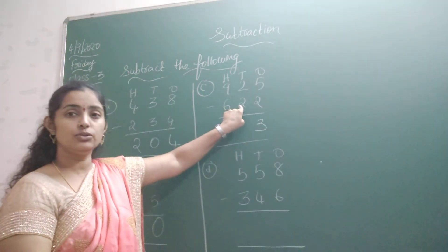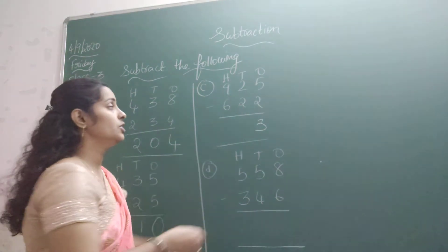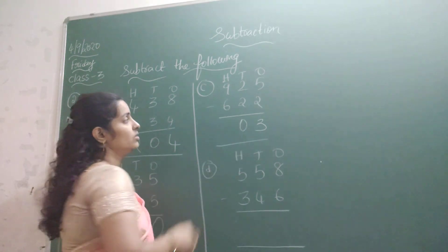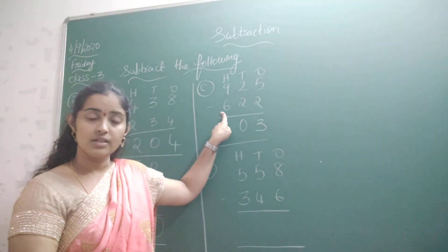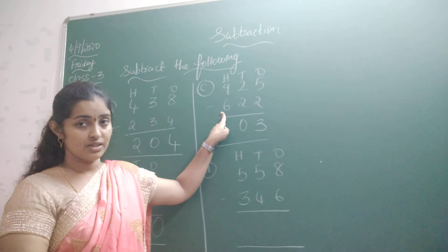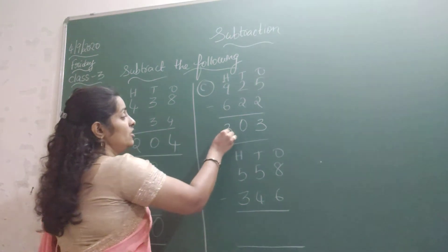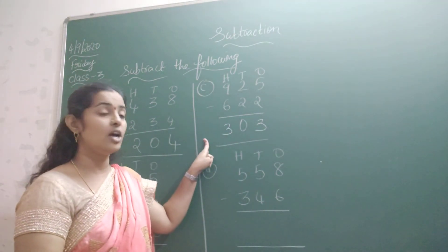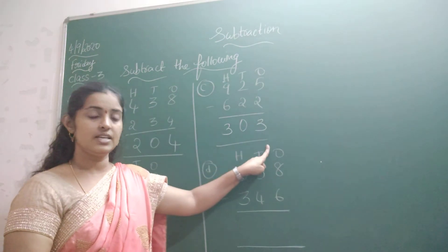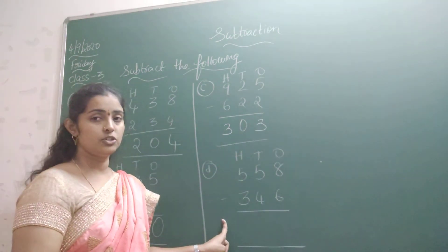Then 2 minus 2. 2 minus 2 is how much? 2 minus 2 is 0. Then 9 minus 6. 9 minus 6 is how much? 9 minus 6 is 3. So what is the required answer I got? That is 303. Now come to the next problem.